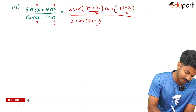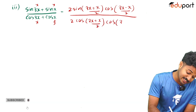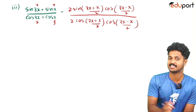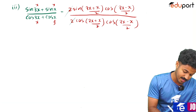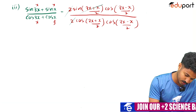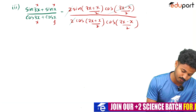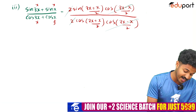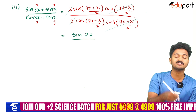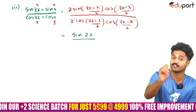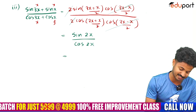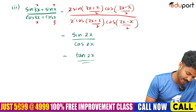For the denominator: cos x + cos y = 2·cos((x+y)/2)·cos((x−y)/2). After applying both formulas, the 2s cancel. We get sin((3x+x)/2)/cos((3x+x)/2), which is sin(2x)/cos(2x)... simplifying further to sin(x)/cos(x) = tan x.